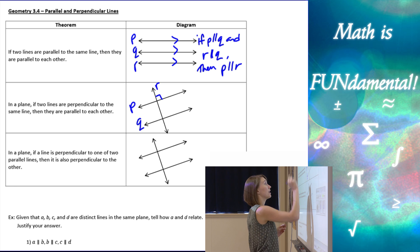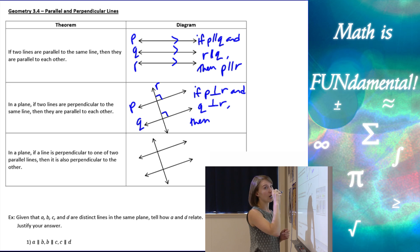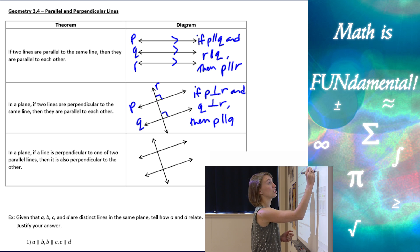So, if P is perpendicular to R and Q is perpendicular to R. If P perpendicular to R and Q is perpendicular to R, then we know that P has to be parallel to Q. P is parallel to Q.